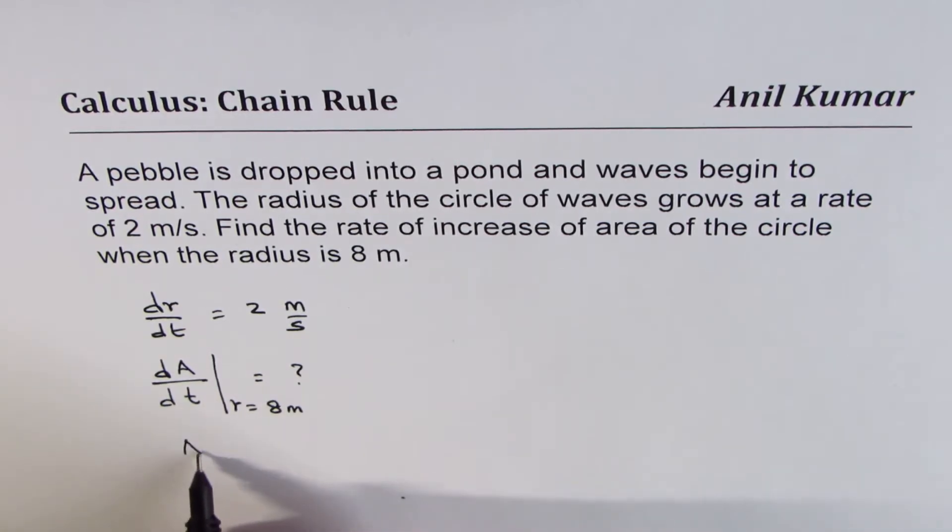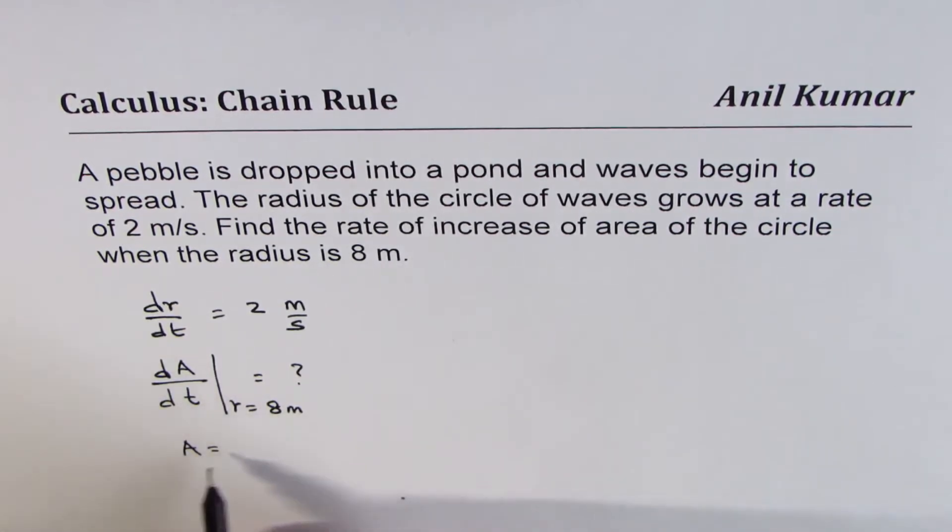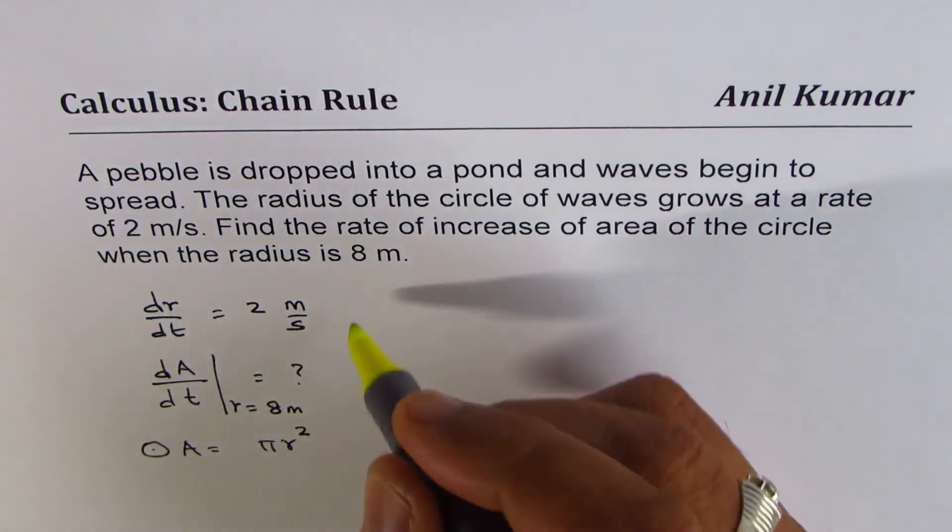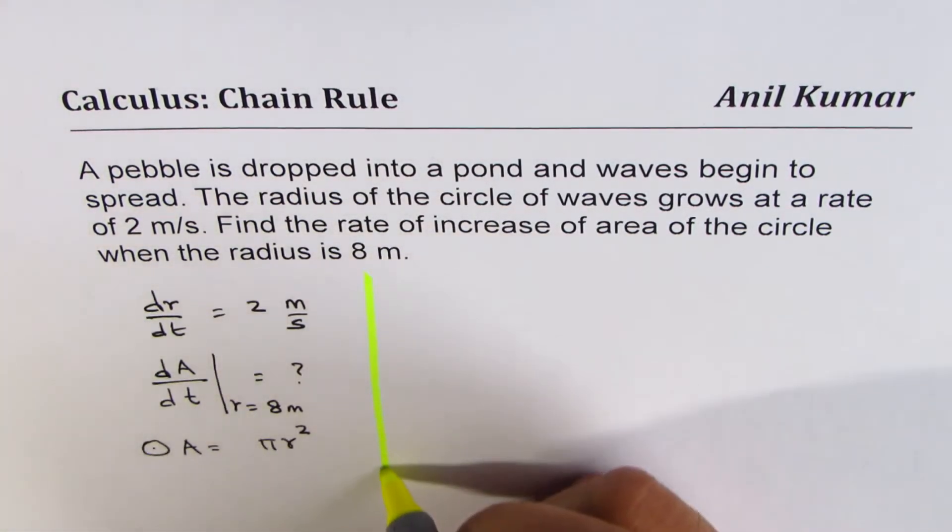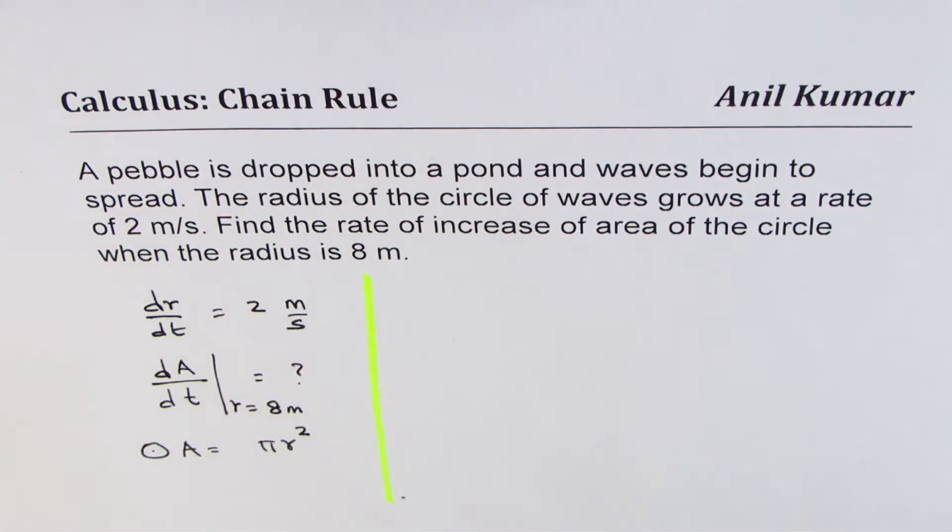So we can take help of the formula, area of a circle is pi r squared. That should help us to answer this question from the given conditions. You can always pause the video, answer the question, and then look into my suggestions.